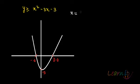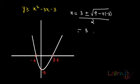The roots of this quadratic will be x = (-b ± √(b² - 4ac))/2a. So that's (3 ± √(9 - 4(-3)))/2, which gives us (3 ± √21)/2.